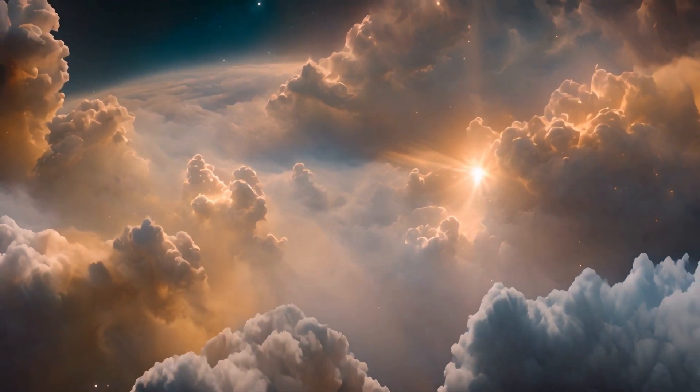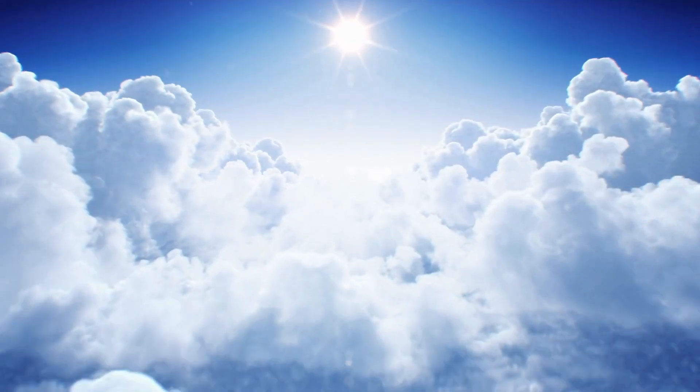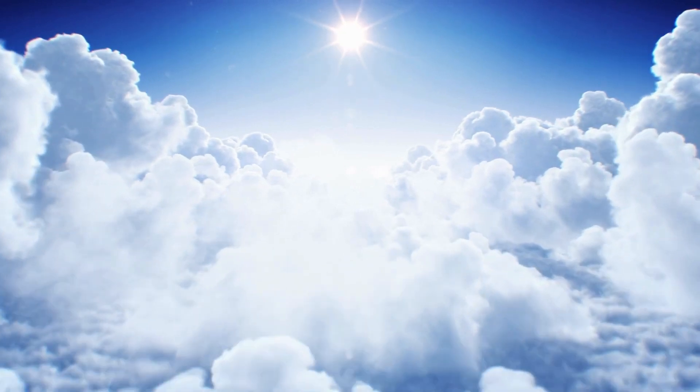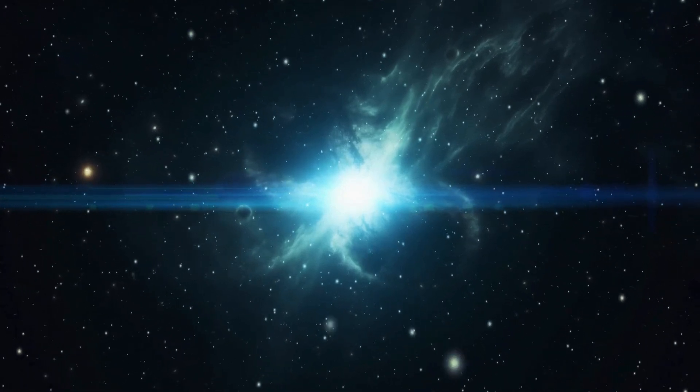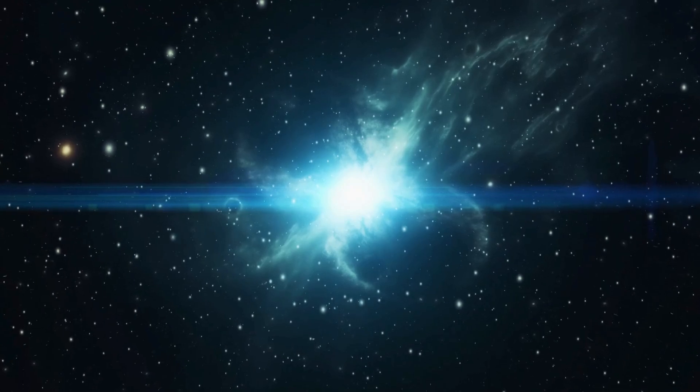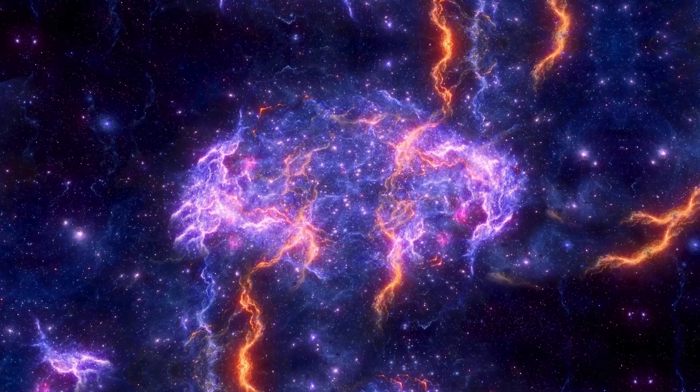A supernova is a cataclysmic explosion, an astounding burst of energy that can outshine an entire galaxy momentarily. This phenomenon occurs when there is a sudden change in the star's core. Such changes can arise if a star absorbs too much matter from a neighboring star, or, in Betelgeuse's case, it could be from the exhaustion of its nuclear fuel, which cascades its mass into the core, setting the stage for a cataclysmic collapse.